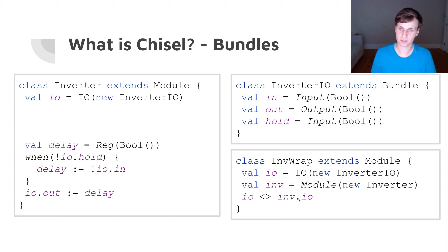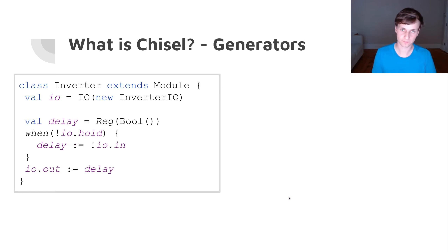So we have two bundles of the same type — some signals are inputs, some are outputs — and we just wire them all together with a single line of code.